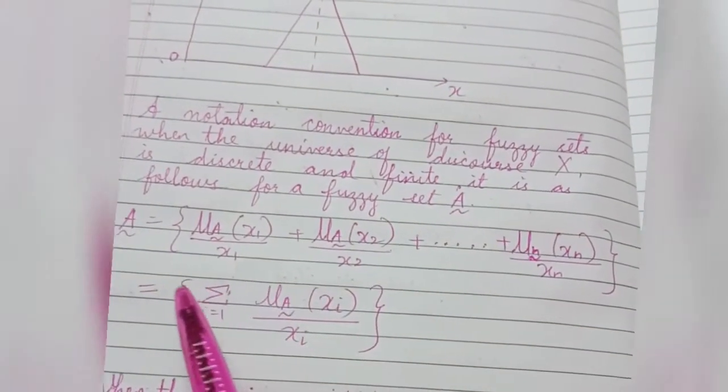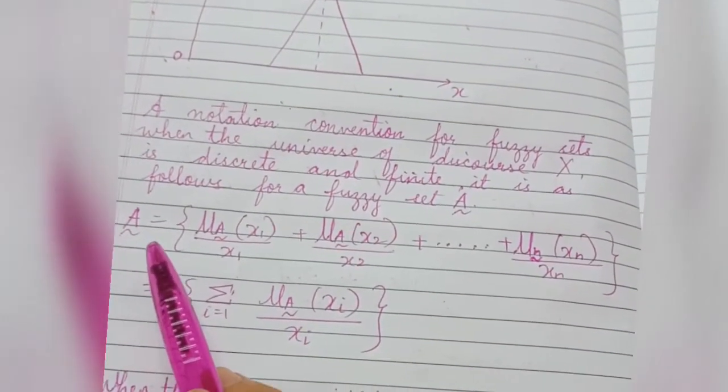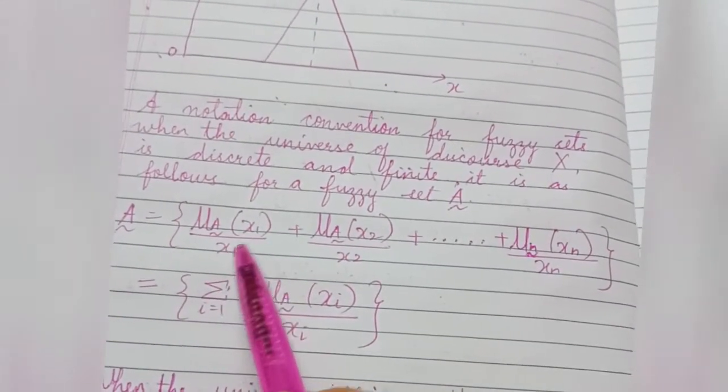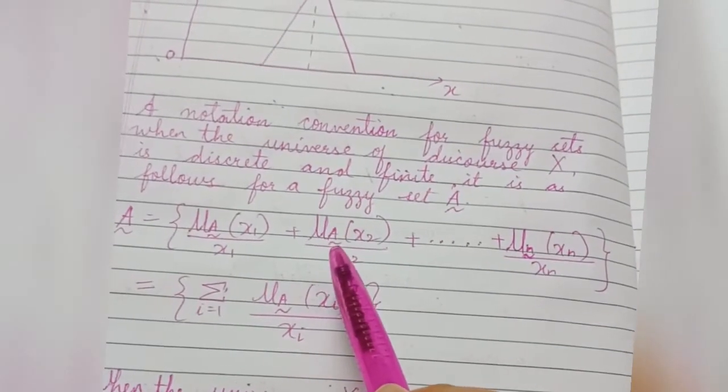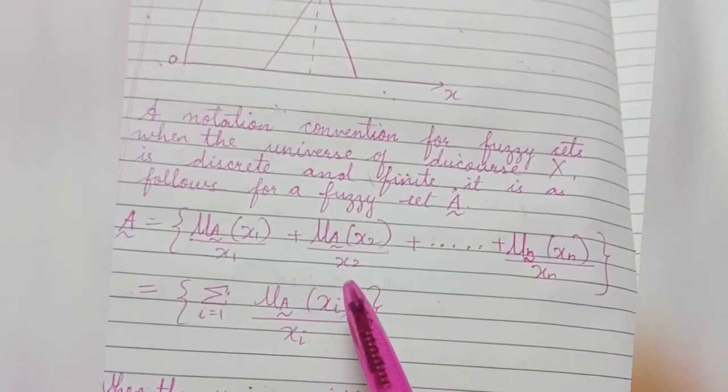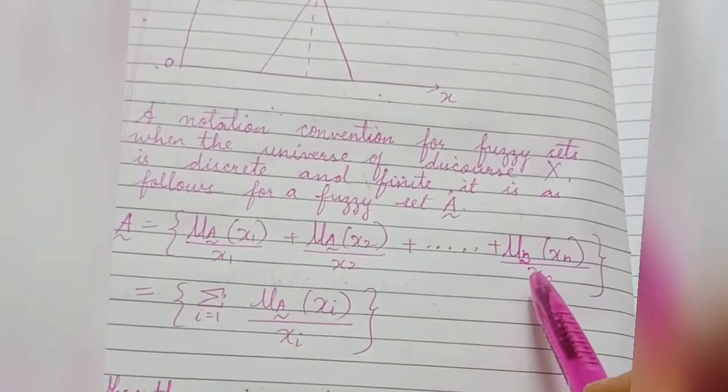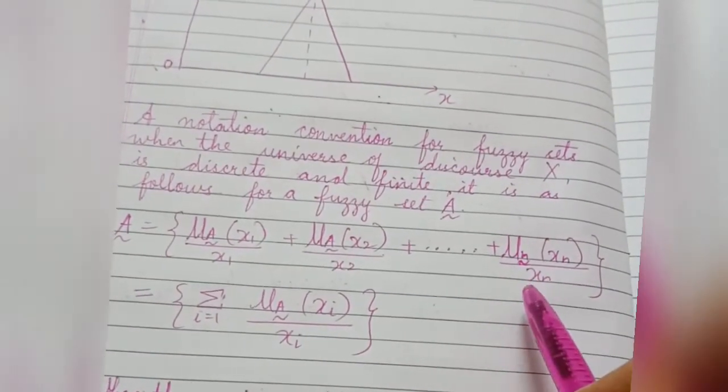The notation is given as fuzzy set A equals, in curly brackets, μA(X1)/X1 + μA(X2)/X2 + ... + μA(Xn)/Xn.